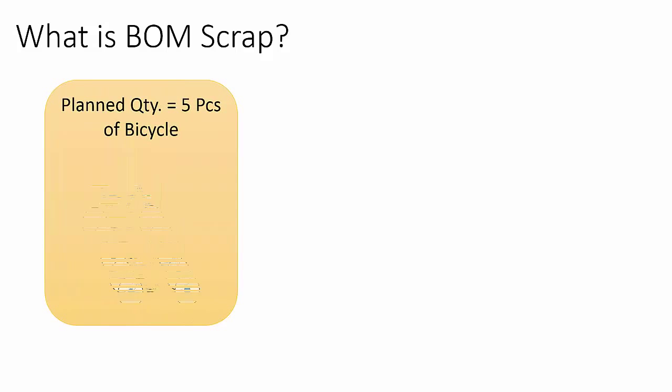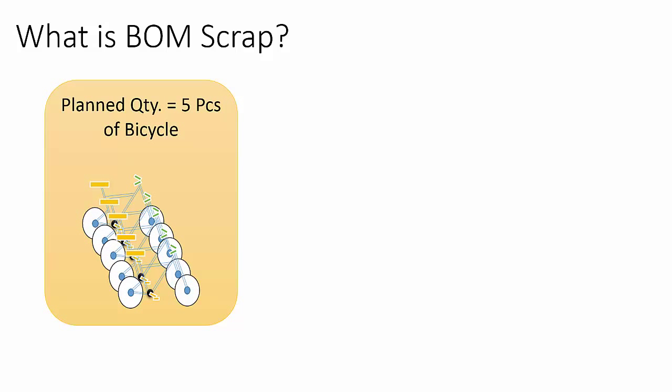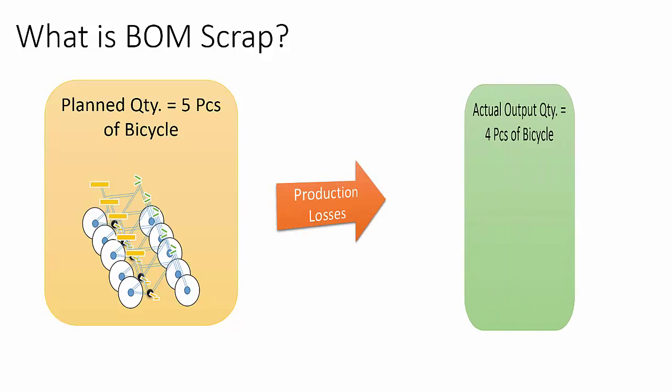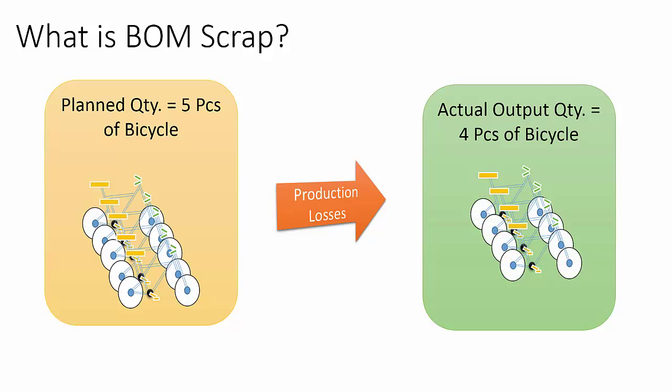During production there will always be some losses due to various reasons, and due to this we will get less output than planned. For example, if we plan to produce 5 pieces of bicycle we may get around 4 pieces as the final output, as one piece of bicycle always gets scrapped during quality testing. To get the actual planned output, we need to increase the planned quantity by some percentage so that we will get the output as per expectation. In this case, if we plan to produce 5 pieces we may need to start production for 6 pieces to get the final output of 5 pieces. For this we use BOM scrap.